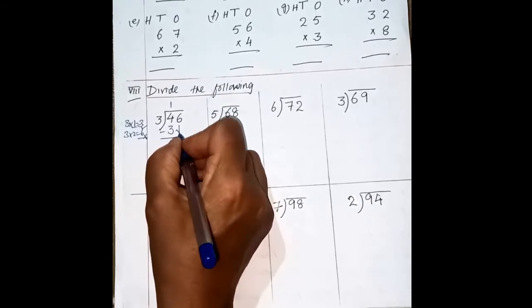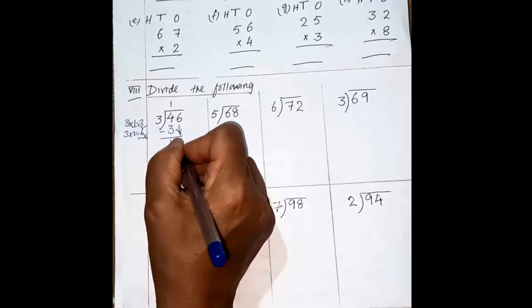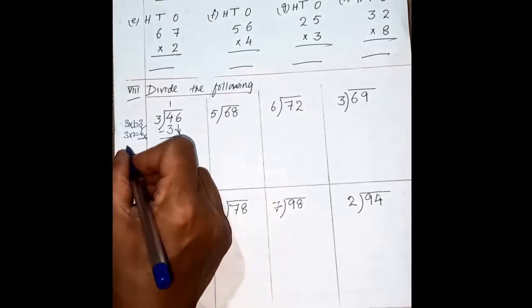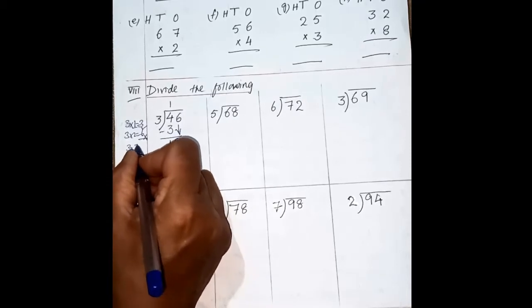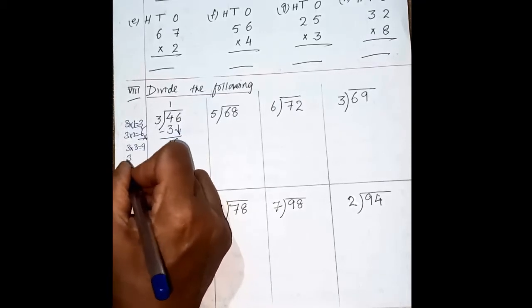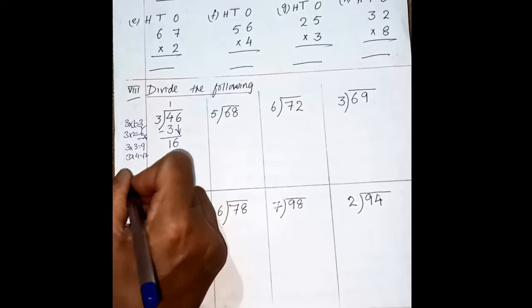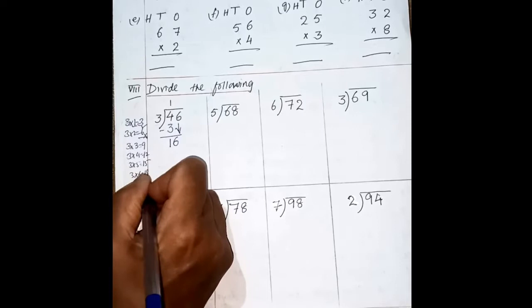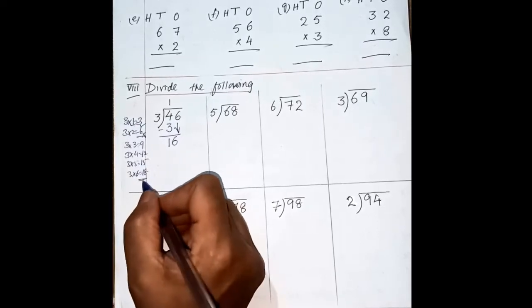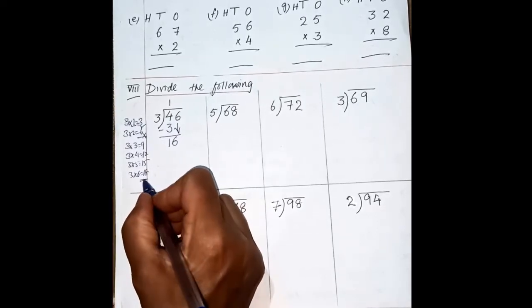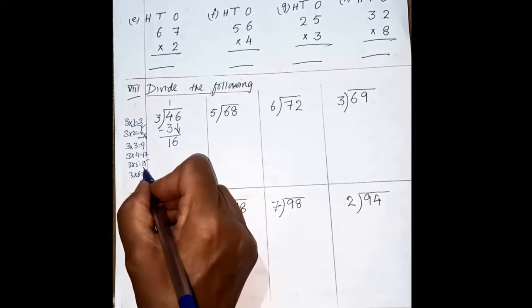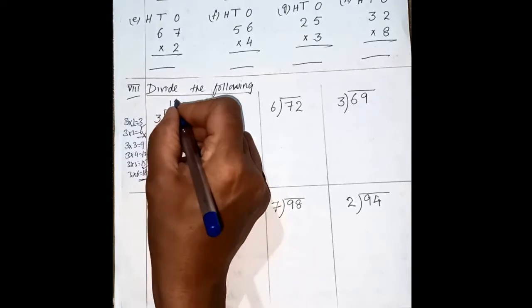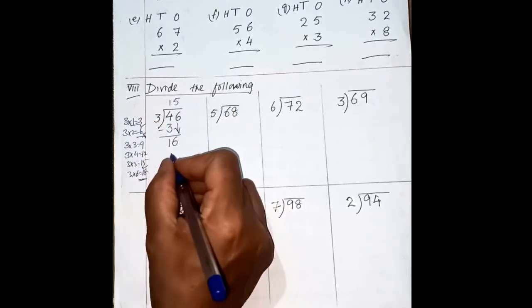Now look at the next number: 6. Bring it down next to the remainder. Now your number is 16. Let us write the table of 3: 3 threes are 9, 3 fours are 12, 3 fives are 15, 3 sixes are 18. We stop when we are getting the greater number — always take one time less. That is 15. So how many times is it going? 3, 5 times. So 3 fives are 15.